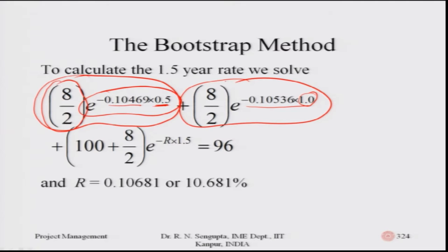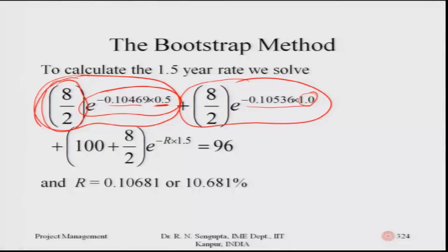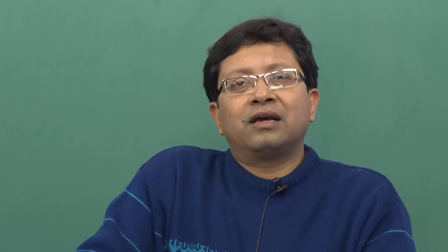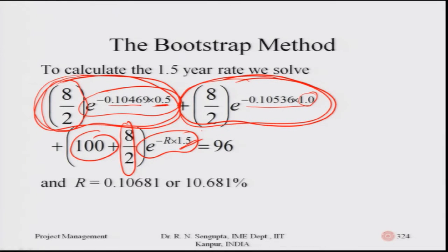The last term: at one point five years you get back the principal of 100 plus the interest, which is eight by two again since it is paid every six months. For the 1.5-year period — first six months, then next six months — the interest plus the principal are both discounted using the continuous compounding rate r for 1.5 years. Since the actual value from the table is 96, you equate and solve to find r.